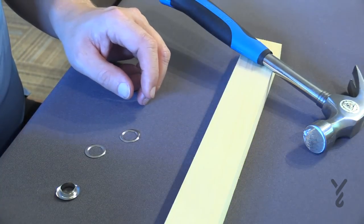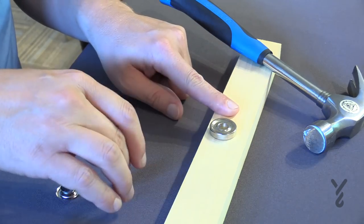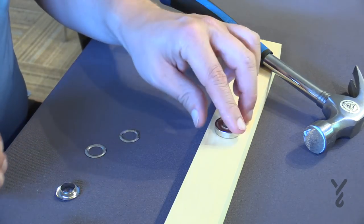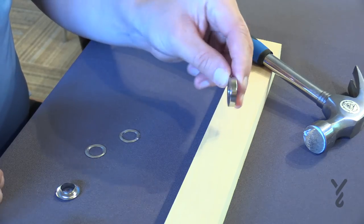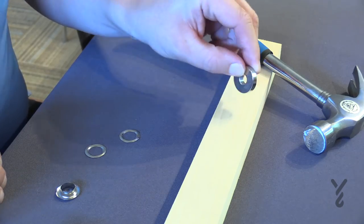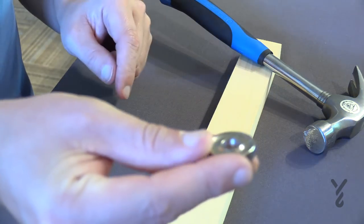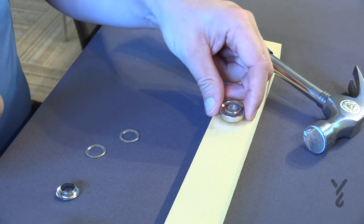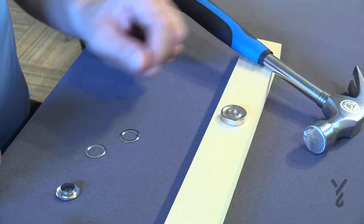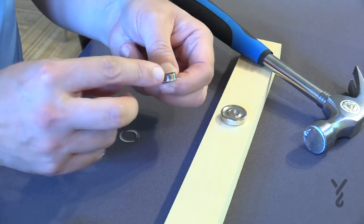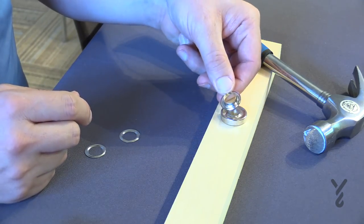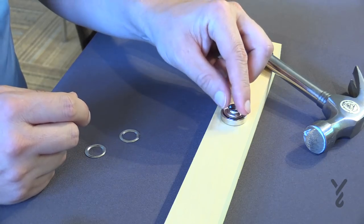To do any kind of grommet work, you're going to need a hard surface other than a table or something you don't want to ruin. You'll notice this is the bottom of the punch. There's a flat side and then a side that has a cupping. The cupping side should face up, and the one with the bigger lip will sit down on top of the cup.